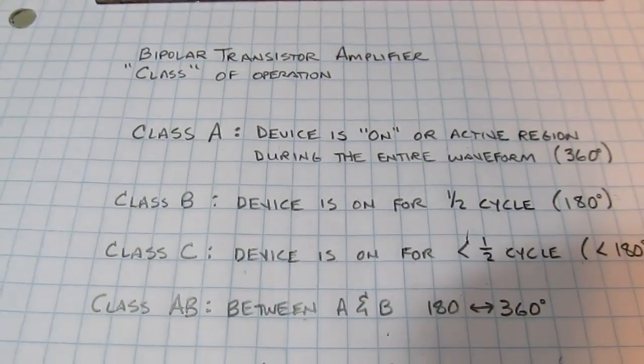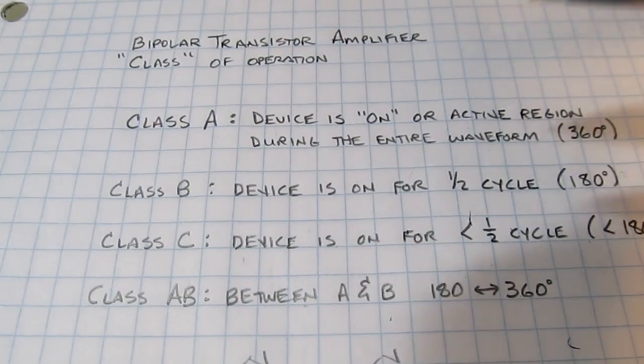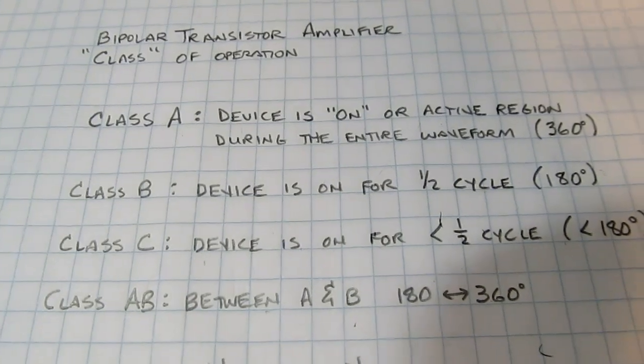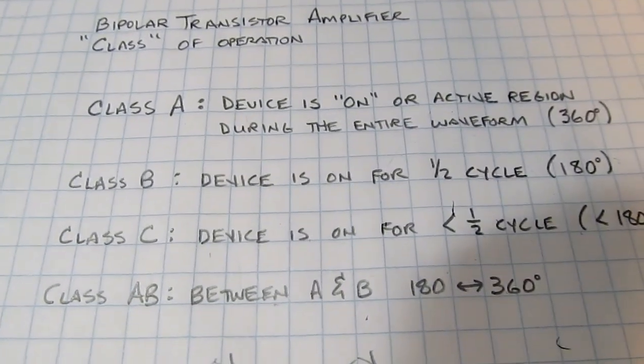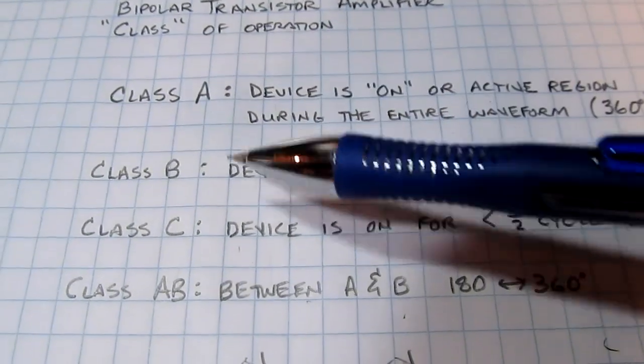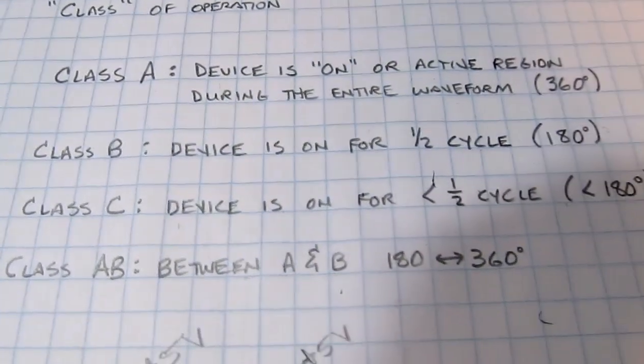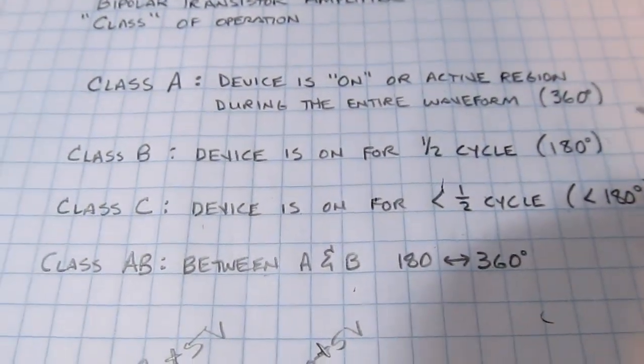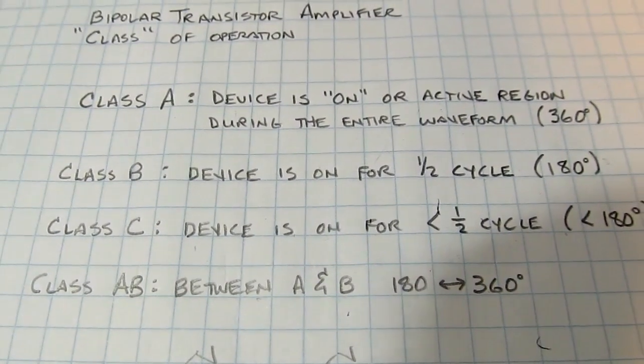Next we're going to consider how the bias of the amplifier determines the class of operation for that amplifier. You'll often hear about an amplifier running in class A or class B, class C, etc. And there's other classes too, from D up through G and other letters. We're not going to consider those in this simple tutorial.